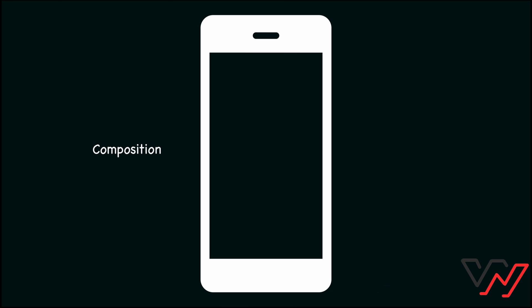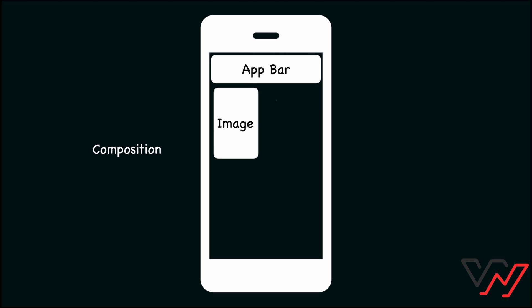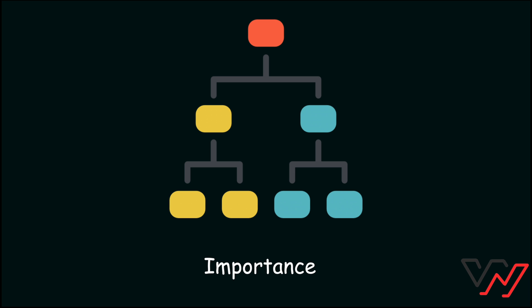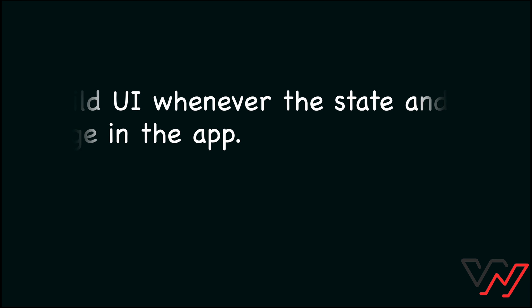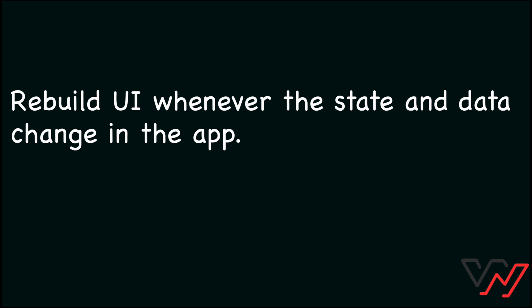One of the key concepts in Flutter is the idea of composition. Widgets can be composed together to create complex UIs, with each widget responsible for a specific aspect of the interface. Flutter uses a reactive framework where changes to the UI are reflected by rebuilding parts of the widget tree. When a widget's state changes, Flutter efficiently updates the affected parts of the widget tree and redraws the UI accordingly, ensuring smooth performance even on complex interfaces.